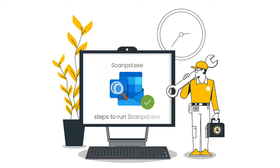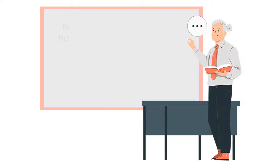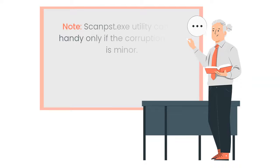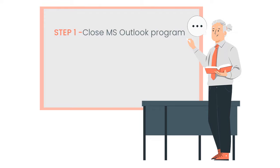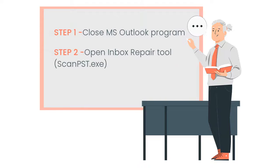Here are the steps to run the SCANPST.EXE utility. Note: SCANPST.EXE utility can be handy only if the corruption level is minor. Step 1, close MS Outlook program. Step 2, open the Inbox Repair Tool, SCANPST.EXE.